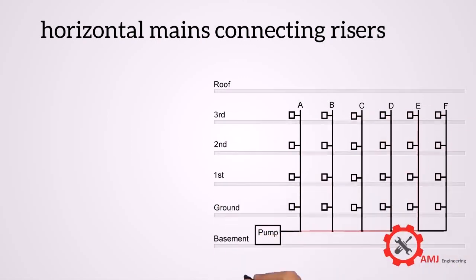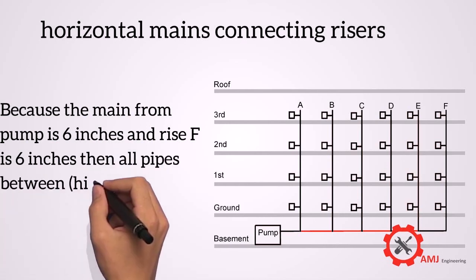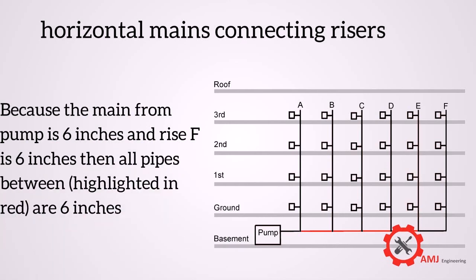Now, because the pump main is 6 inches, and riser F is 6 inches, then all main pipes in between, highlighted in red, shall be 6 inches.